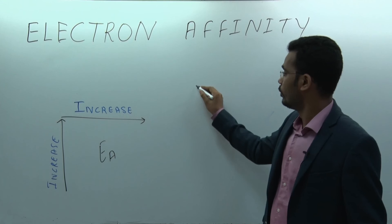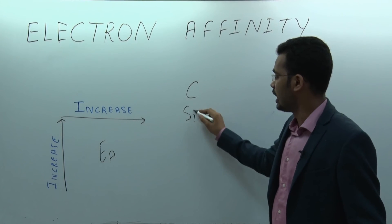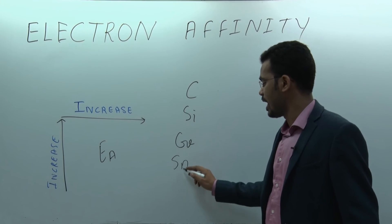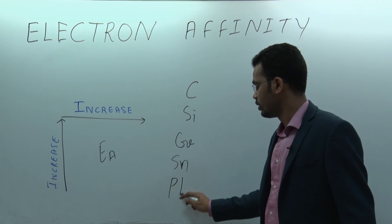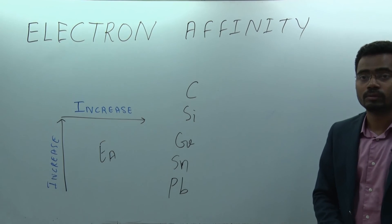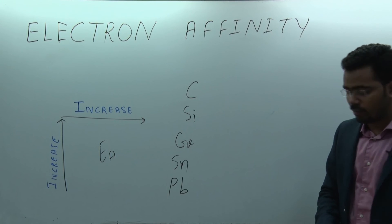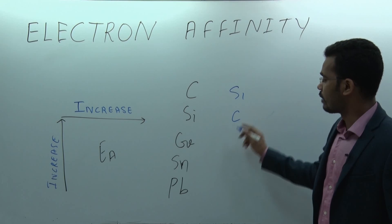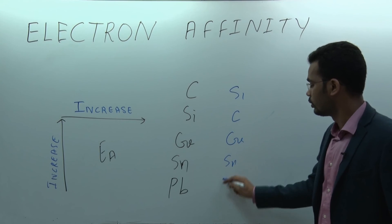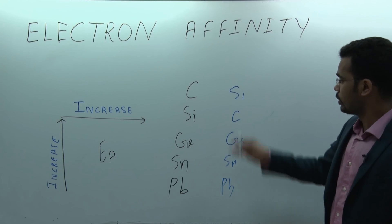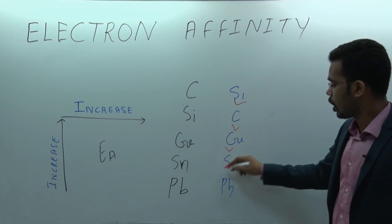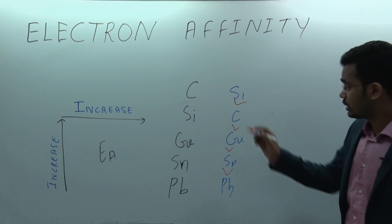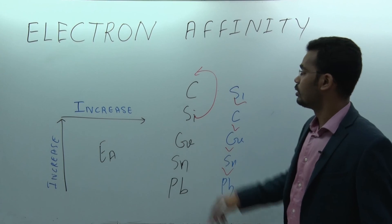Consider Group IVA elements: Carbon, Silicon, Germanium, Tin, and Lead. What will be the order of electron affinity? The order will be: Si > C > Ge > Sn > Pb. This is because silicon (third period) has higher electron affinity than carbon (second period) due to the third-period rule, and then the trend decreases down the group.